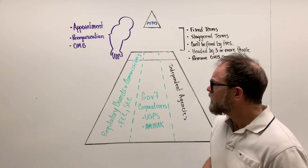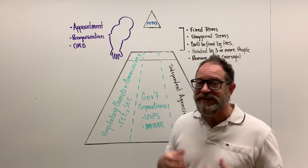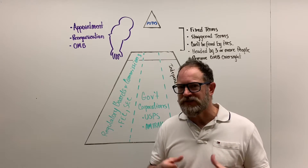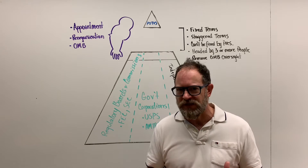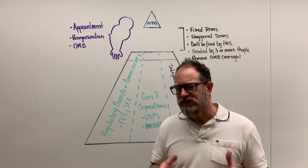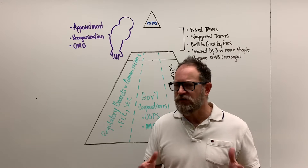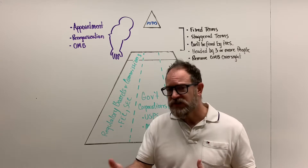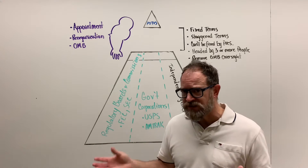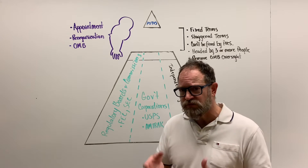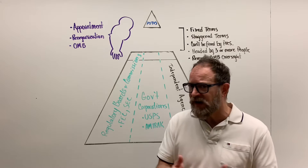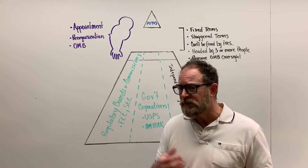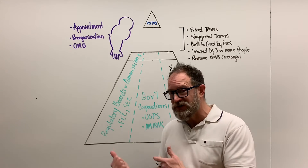In addition, we have regulatory boards and commissions - entities designed to regulate a sector of the economy, regulate business, regulate an industry. They primarily do so by creating regulations. This is that quasi-legislative power we talked about earlier. The bureaucracy almost operates like its own little government - it makes and enforces rules and interprets them. Regulatory commissions and boards create regulations by which businesses must operate, and if a business violates those rules, they have quasi-judicial power to issue fines, mete out punishments, and determine whether a business has violated the established rules.